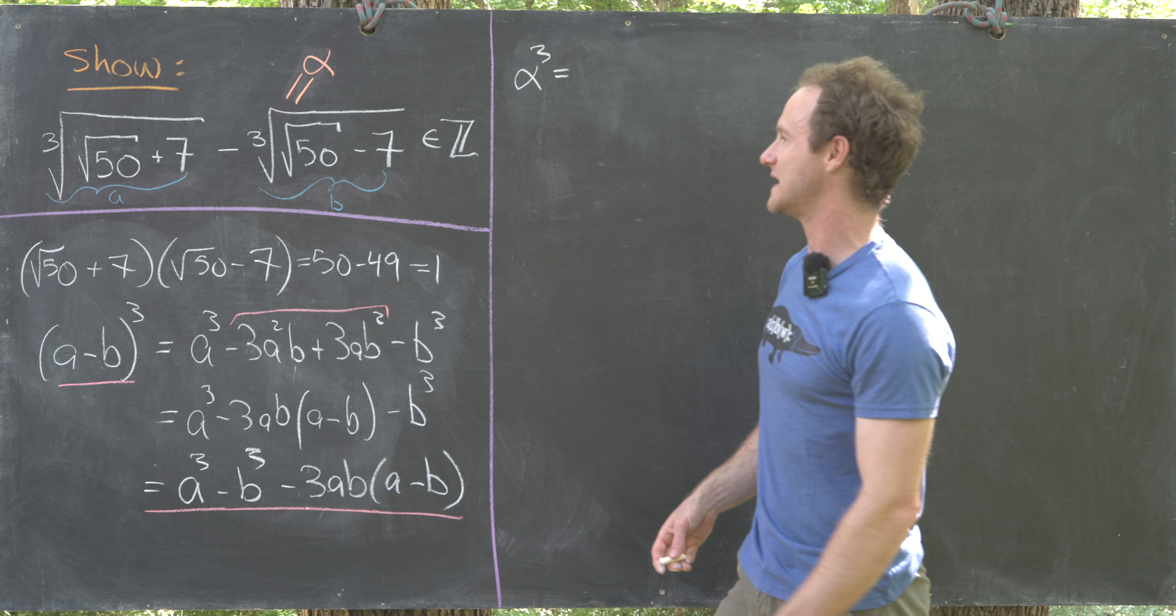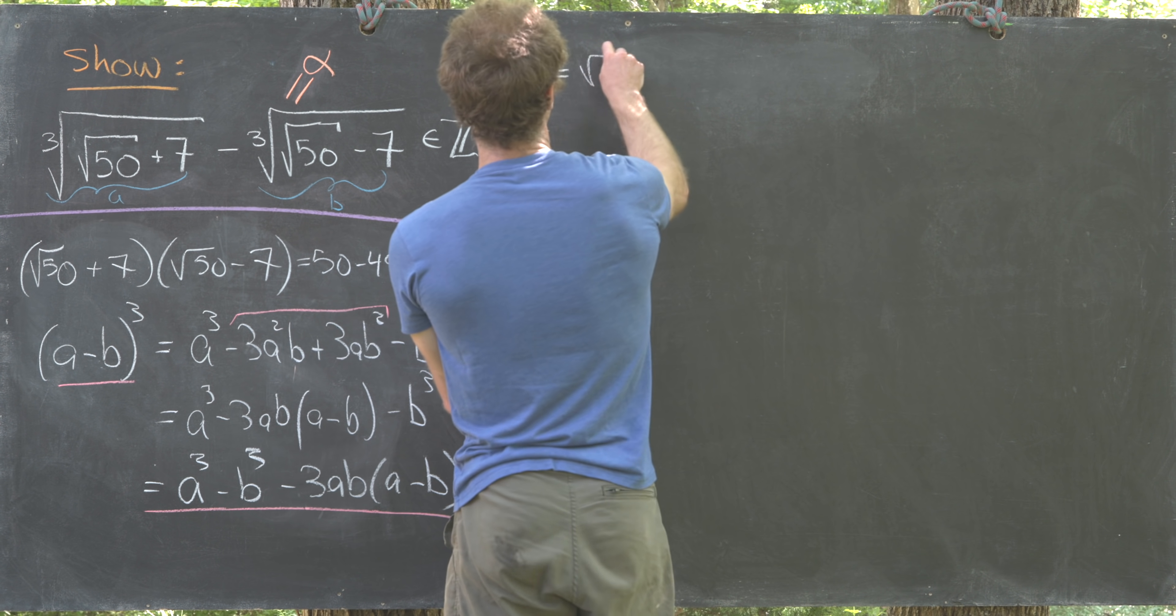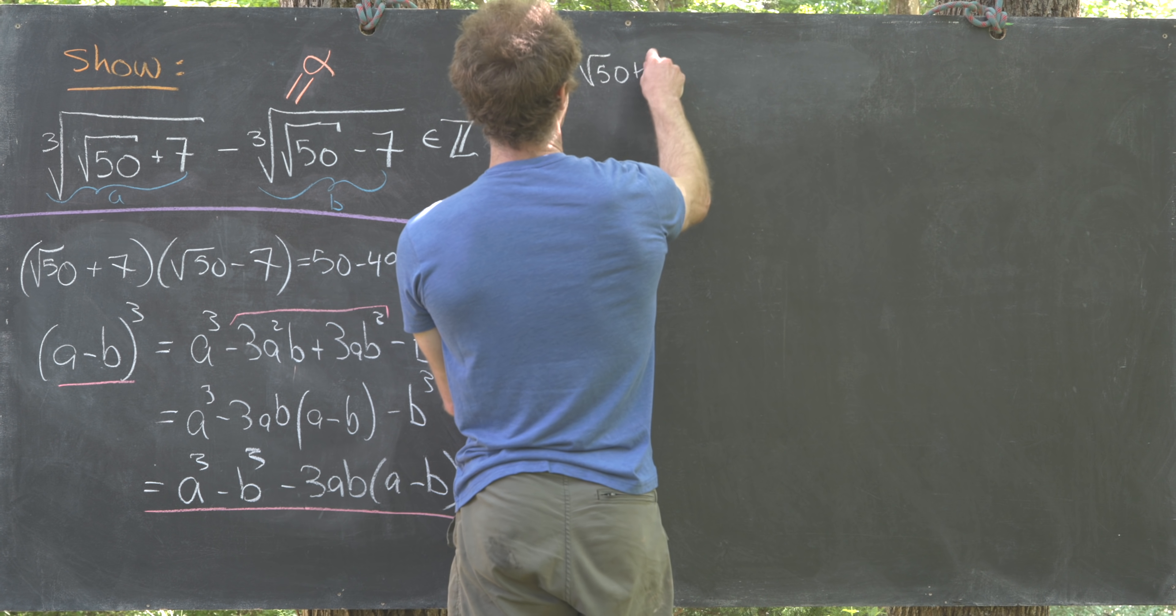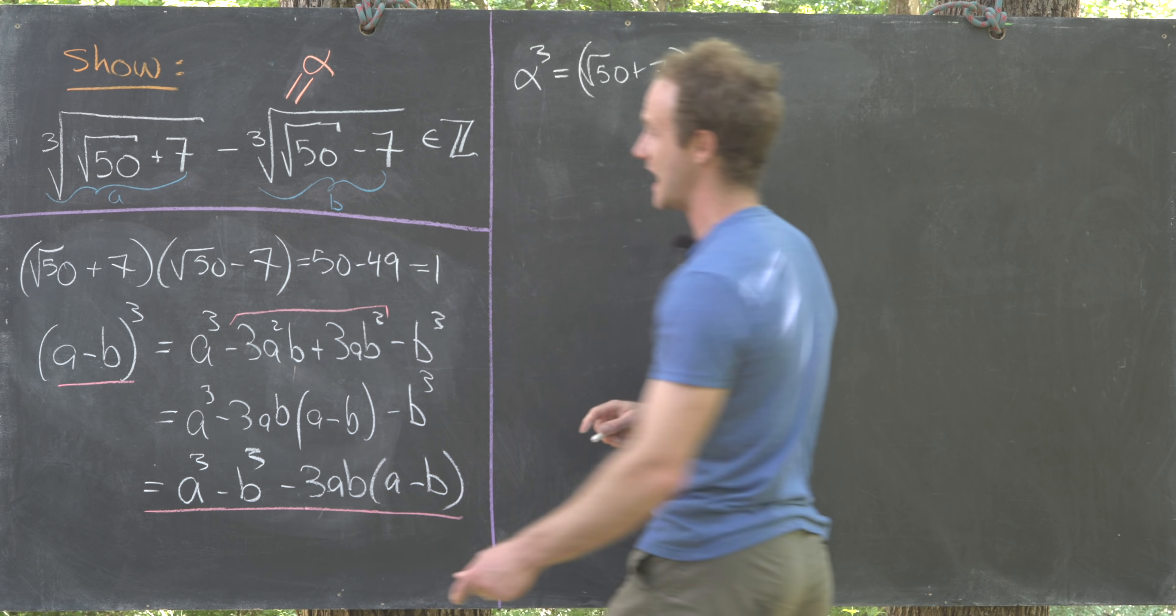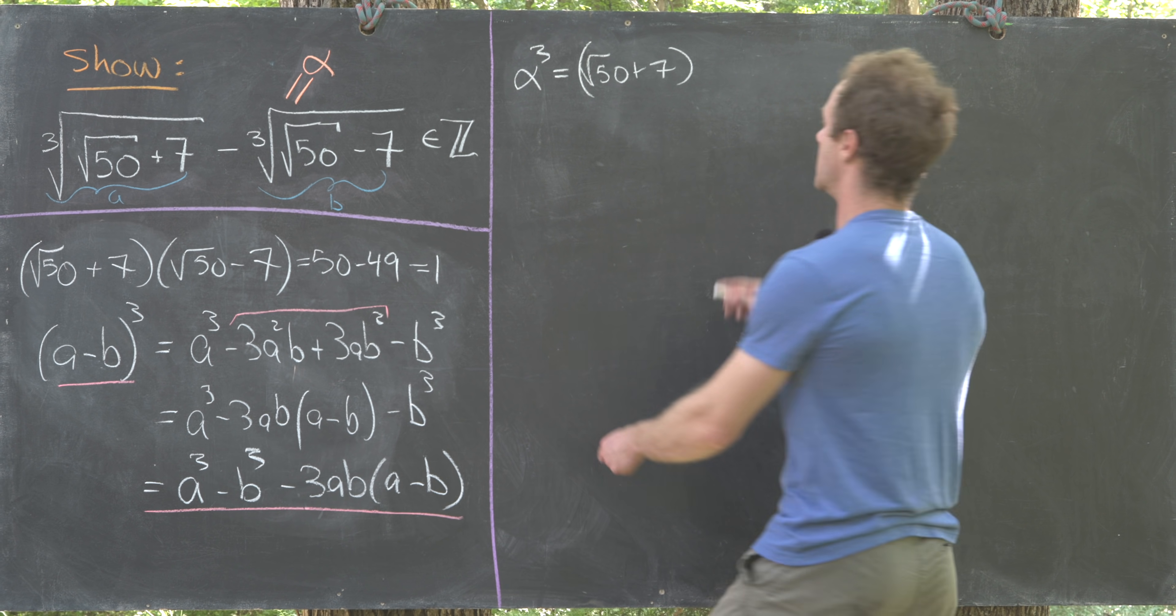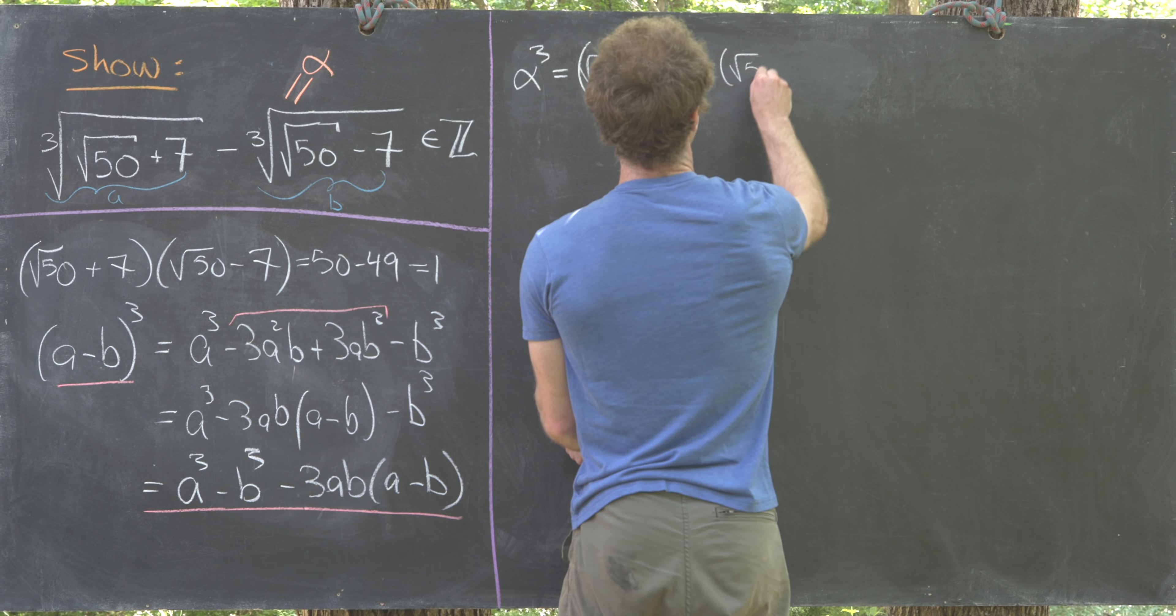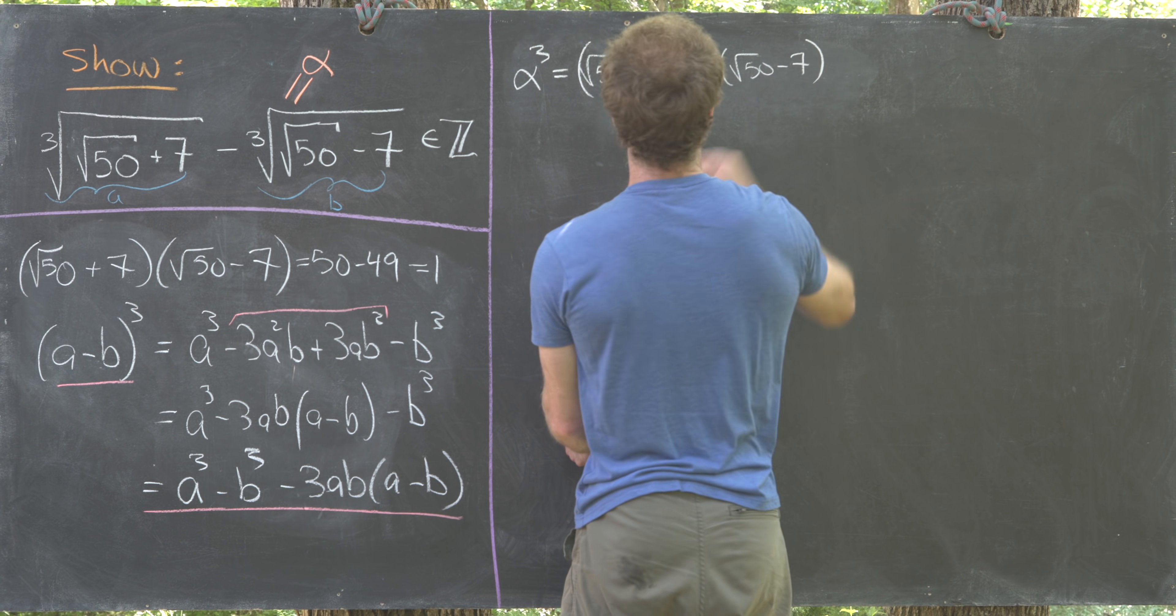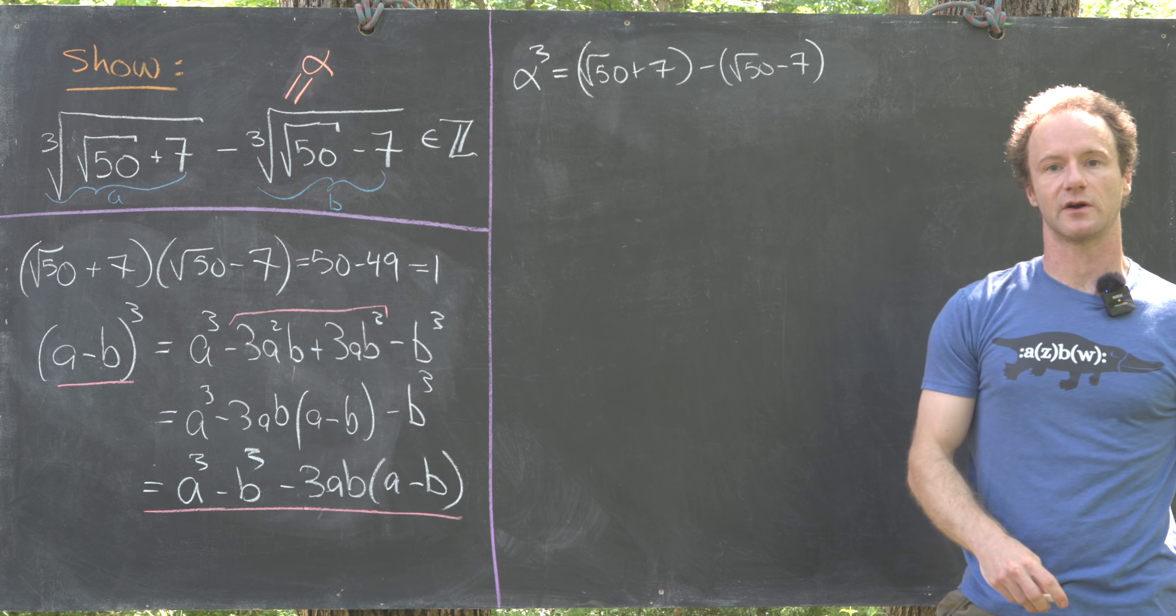Notice we'll have a cubed minus b cubed. That'll give us the square root of 50 plus 7, that's our a cubed term. Then minus the square root of 50 minus 7, that'll be our b cubed term.